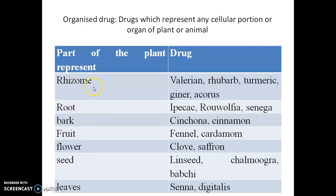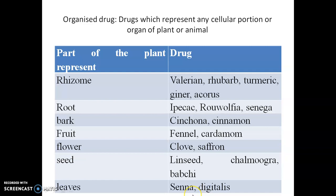Similarly, root-containing drugs include ipecac, rauwolfia, and senega. Bark-containing drugs include cinchona and cinnamon. Fruit-containing drugs include fennel, coriander, and cardamom. Flower-containing drugs include pyrethrum, clove, and saffron. Seed-containing drugs include linseed, chaulmoogra, babchi, and psoralea. Leaf-containing drugs include senna, vasaka, tulsi, and digitalis.